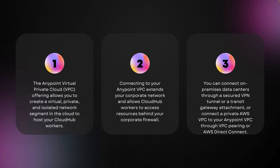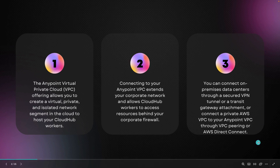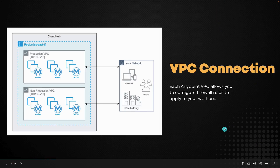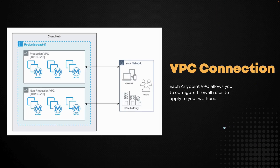If you use a dedicated load balancer, you can configure one or more dedicated load balancers to validate requests using your own SSL certificates and to map input URLs to calls to different CloudHub applications. Each VPC also allows you to configure firewall rules to apply to your workers.